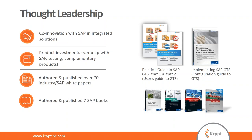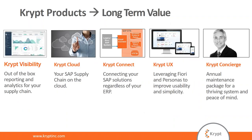We will quickly look at some of our products which complement SAP GTS as well as the SAP supply chain suite. Credility is a reporting and analytics tool for your supply chain. Cloud allows you to put your SAP supply chain on the cloud with our partner-managed cloud option. Crypt Connect enables you to use SAP products even if you don't have an SAP ERP. Crypt UX is a usability and user interface tool, and Crypt Concierge is our maintenance and support package.